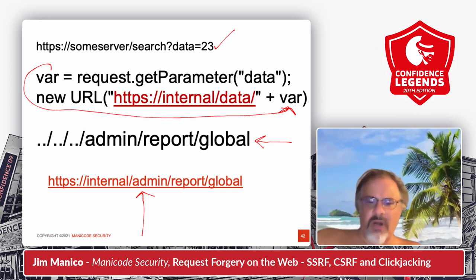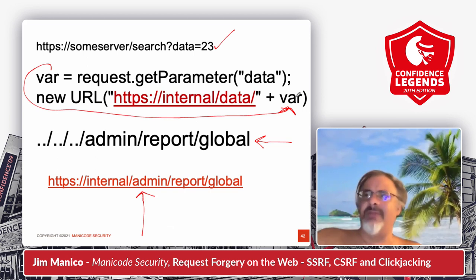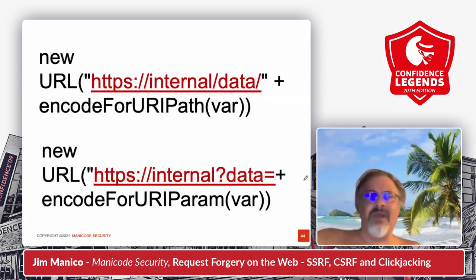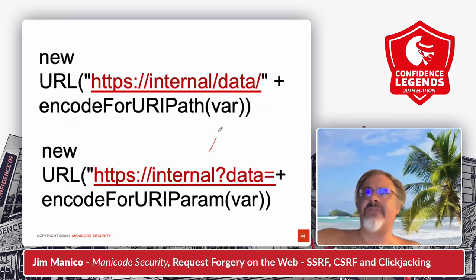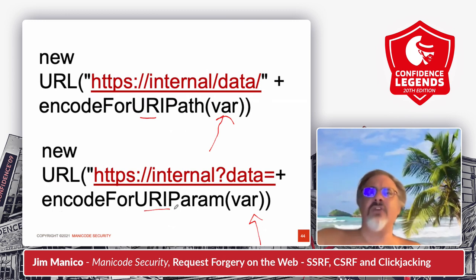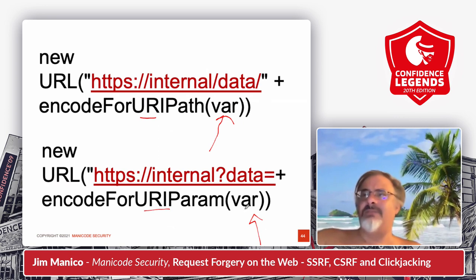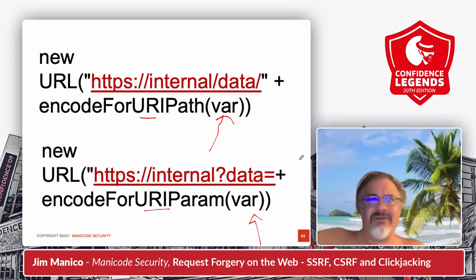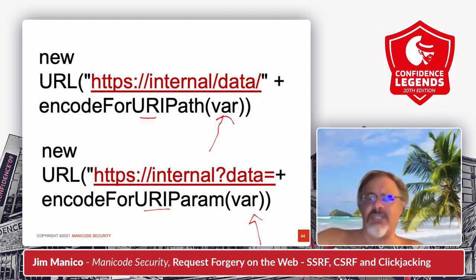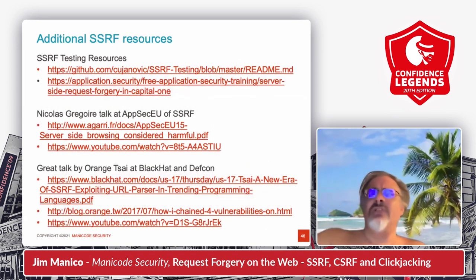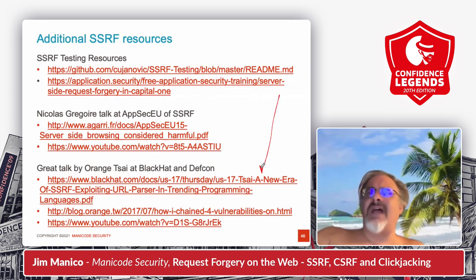If you're going to build a URL where some of the data is a variable from a different source, you should build your URLs so that parameter is encoded for the URL — encode for URL path if putting it on a path, or encode for URI parameter if putting it on a query parameter. No matter what attack reaches that variable, we have encoded it so the path of the URL can't change. Here is some more information about server-side request forgery — go look at Orange Tsai's talk right here, one of the best talks ever on server-side request forgery.